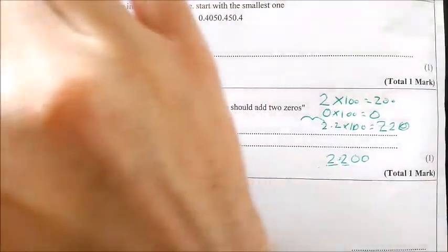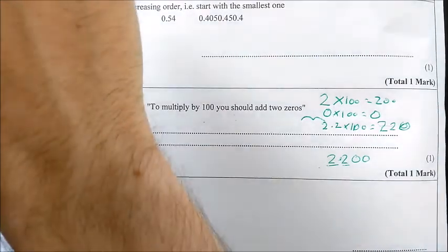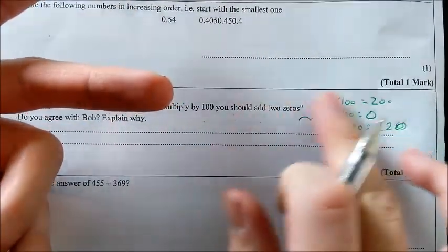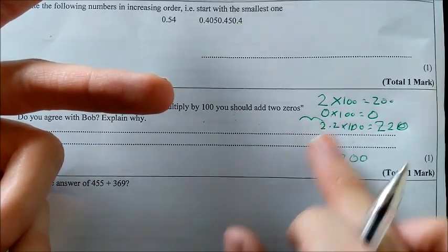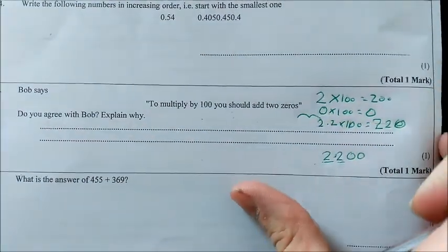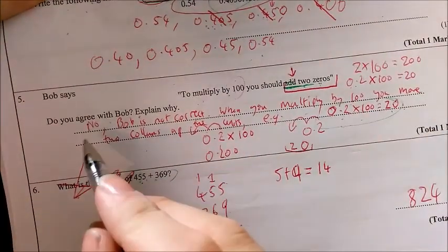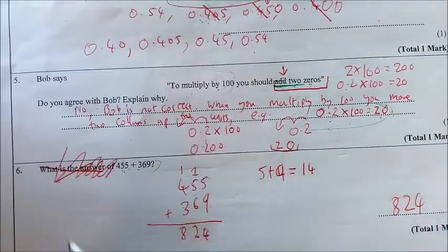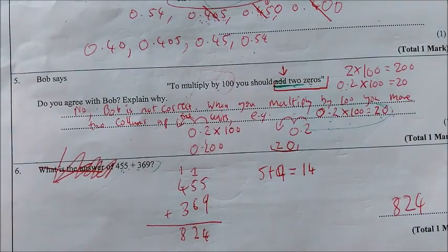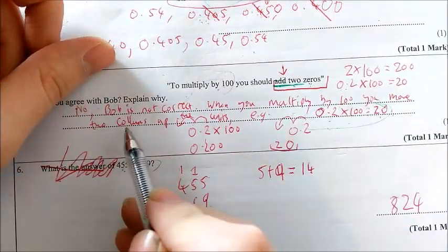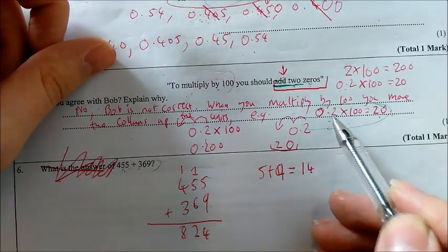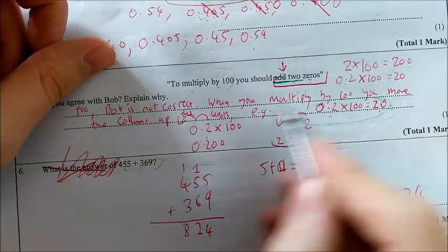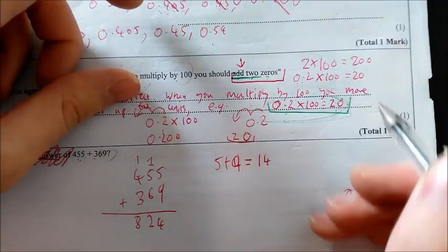So with a question like this, that's what I do. I test out my theory, try and find an example either to agree or disagree. Then I could either write in this case, yes, I agree sometimes, but not always. It works for whole numbers which aren't zero, but it doesn't work for decimals. Or I just write that I completely disagree. So in this example, what I've done is written, no, Bob is not correct. When you multiply by 100, you move two columns up the units, e.g. 0.2 times 100 equals 20.